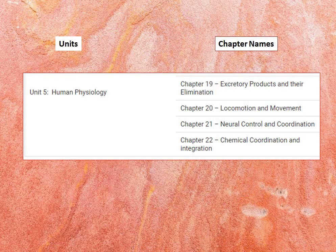The last unit covers Human Physiology. Human physiology includes excretion, digestion, absorption, breathing and respiration, and body fluids and circulation.